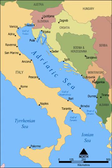It is divided into three basins, the northern being the shallowest and the southern being the deepest, with a maximum depth of 1,233 metres. The Otranto Sill, an underwater ridge, is located at the border between the Adriatic and Ionian Seas. The prevailing currents flow counterclockwise from the Strait of Otranto, along the eastern coast and back to the Strait along the western coast. Tidal movements in the Adriatic are slight, although larger amplitudes are known to occur occasionally. The Adriatic's salinity is lower than the Mediterranean's because the Adriatic collects a third of the fresh water flowing into the Mediterranean, acting as a dilution basin.